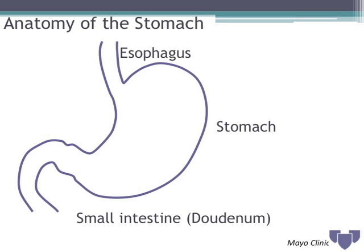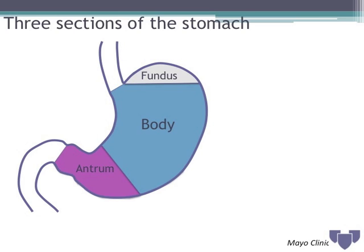To review the anatomy of the stomach: the esophagus enters the stomach and the small intestine leaves the stomach. The first section of the small intestine after the stomach is called the duodenum. The stomach has three sections: at the top is the fundus, in the middle is the body, and at the end is the antrum.